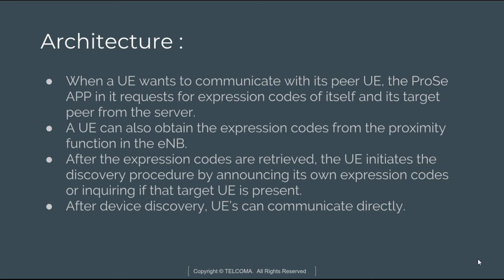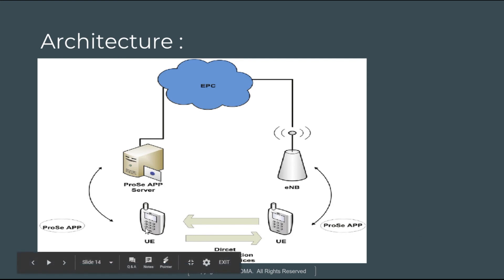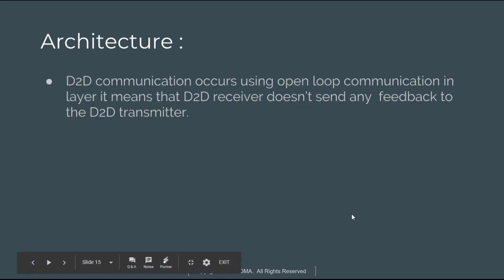After retrieval of the expression codes, the UE initiates the discovery procedure, announcing its own expression codes. After the discovery procedure, user equipments can communicate directly. As shown, the proxy application server and eNodeB support applications installed in a user equipment, enabling direct communication after expression code retrieval.